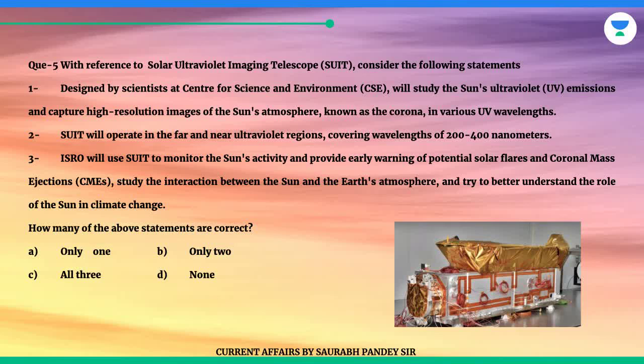Statement 2: SUIT will operate in the far and near ultraviolet regions, covering wavelengths of 200 to 400 nanometers. Statement 3: ISRO will use SUIT to monitor the sun's activity and provide early warning of potential solar flares and coronal mass ejections, CMEs, study the interaction between the sun and the earth's atmosphere, and try to better understand the role of the sun in climate change.